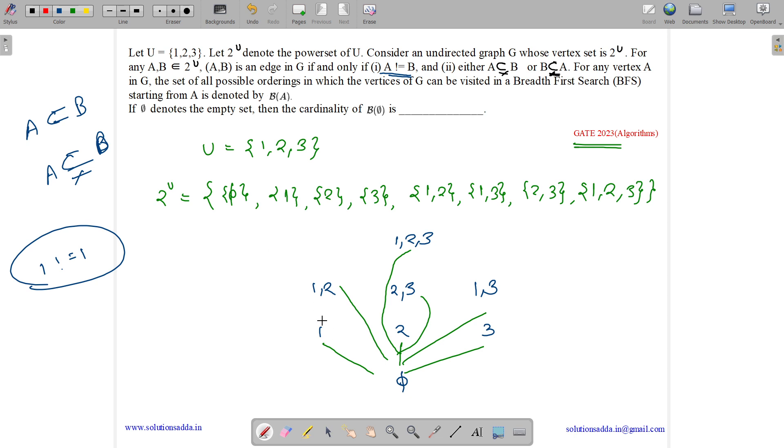Then {1} is a proper subset of {1,2}, {1} is a proper subset of {1,3}, and {1} is a proper subset of {1,2,3}. {2} is a proper subset of {1,2}, {2} is a proper subset of {2,3}, and {2} is a proper subset of {1,2,3}. And {3} is a proper subset of {1,3}, {3} is a proper subset of {2,3}, and {3} is a proper subset of {1,2,3}.